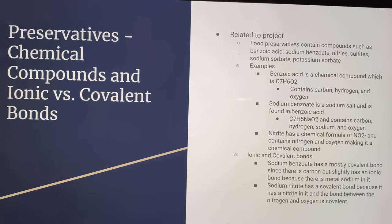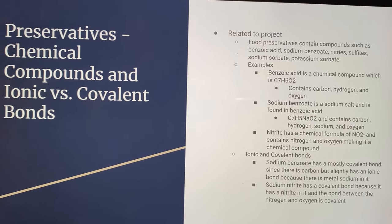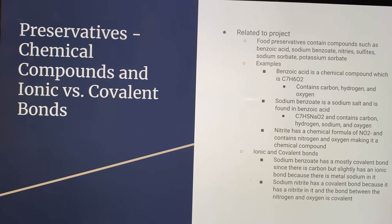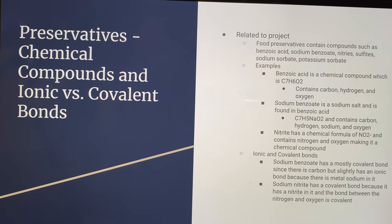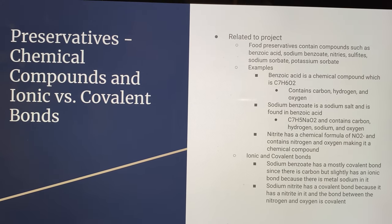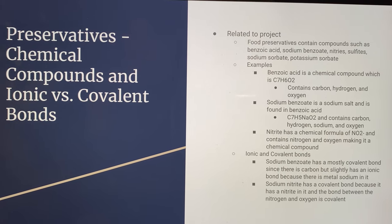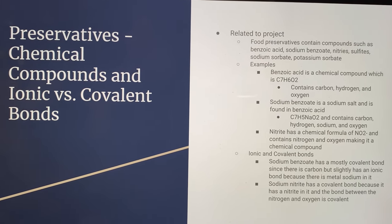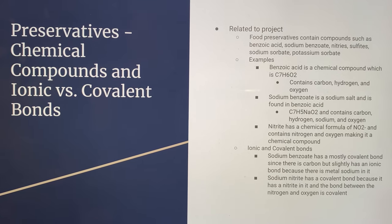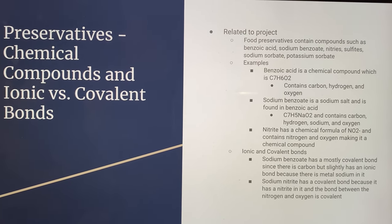Some examples: benzoic acid contains carbon, hydrogen, and oxygen, and its formula is C7H6O2. Sodium benzoate is a sodium salt found in benzoic acid. It contains carbon, hydrogen, sodium, and oxygen, and its formula is C7H5NaO2.